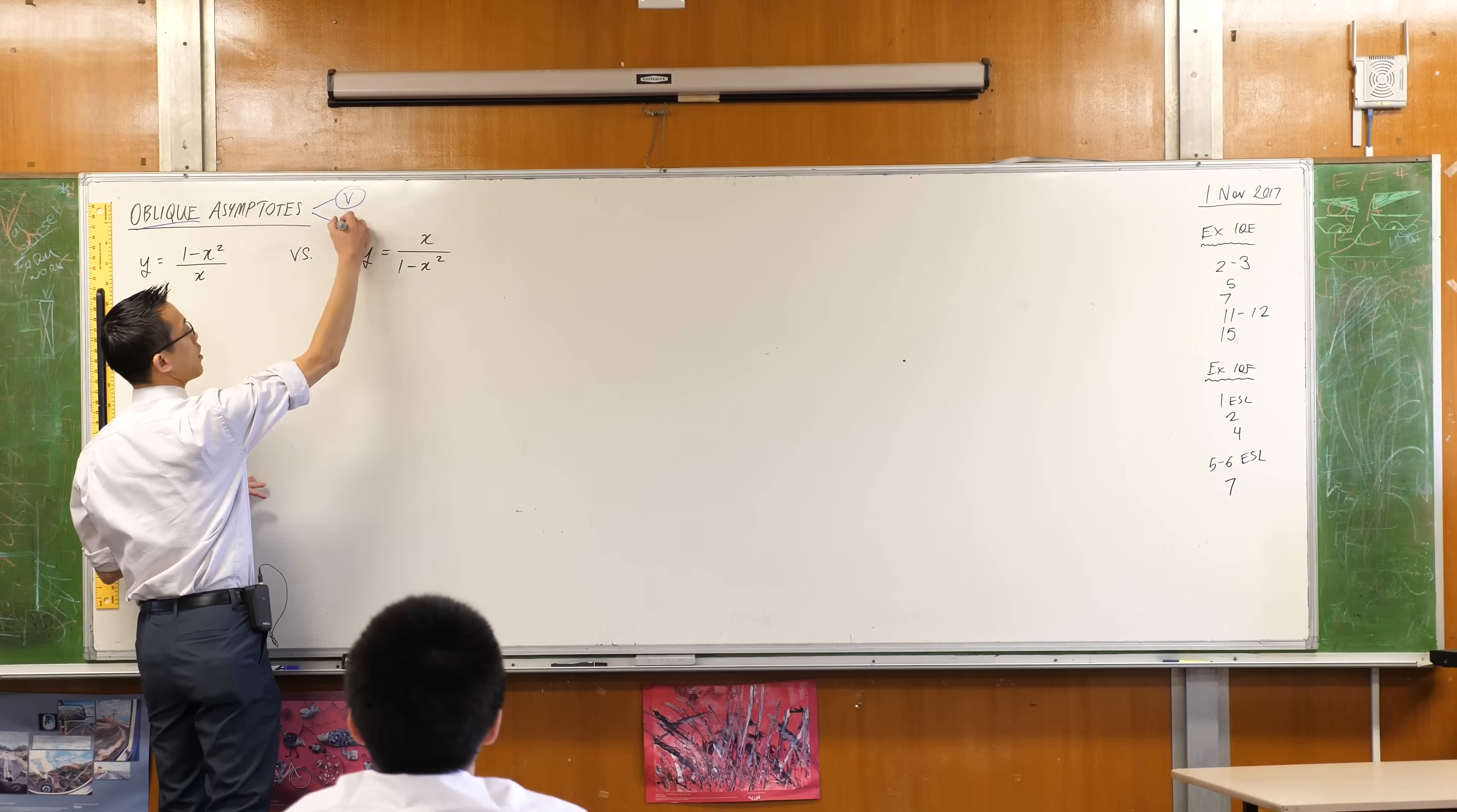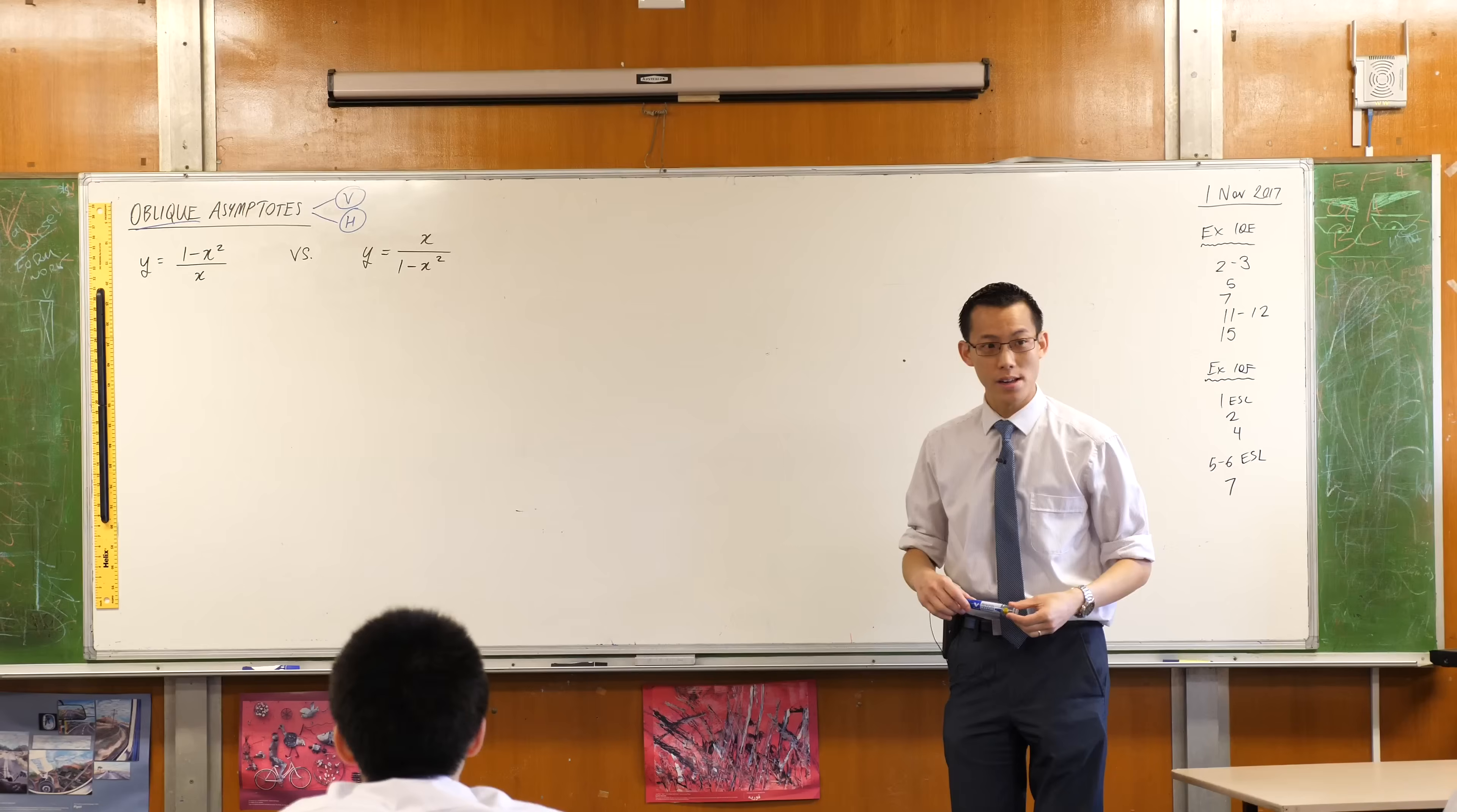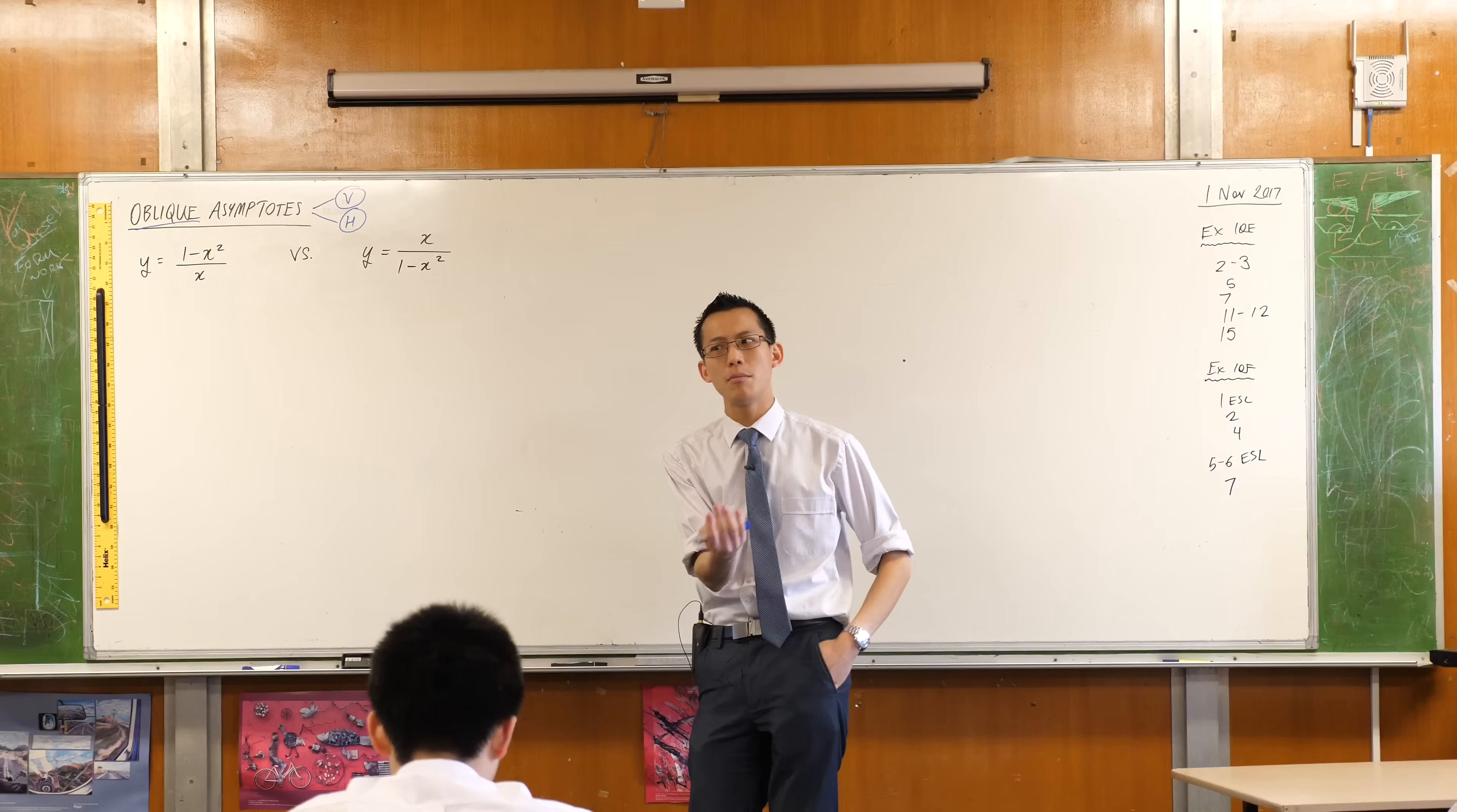We know how to find vertical asymptotes. We're also quite good at working out where horizontal asymptotes are. This one on the right-hand side has a horizontal asymptote. Can you help me work out what it is? Actually, you tell me.